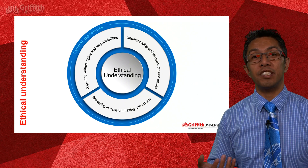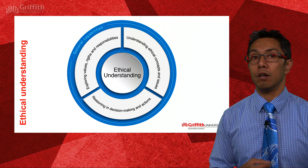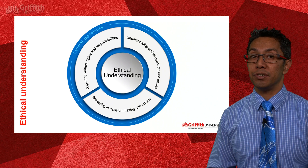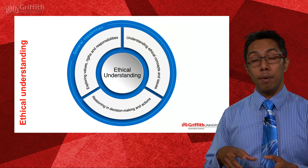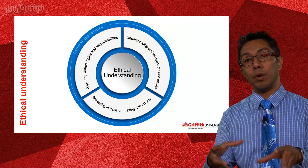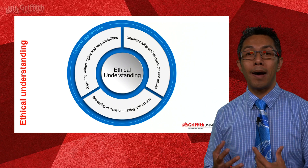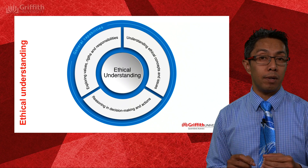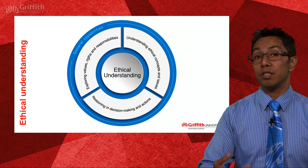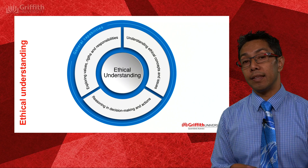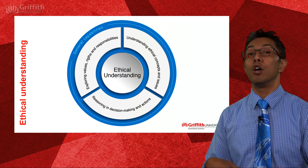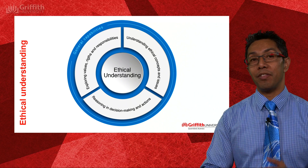An example of developing ethical understanding in science is where you do animal dissections as part of a unit on human body systems, and then include a compulsory activity where students puzzle through the ethical treatment of animals — not only for food production but also in science research — such as the ethics of bringing a rat into the classroom to dissect it for learning.